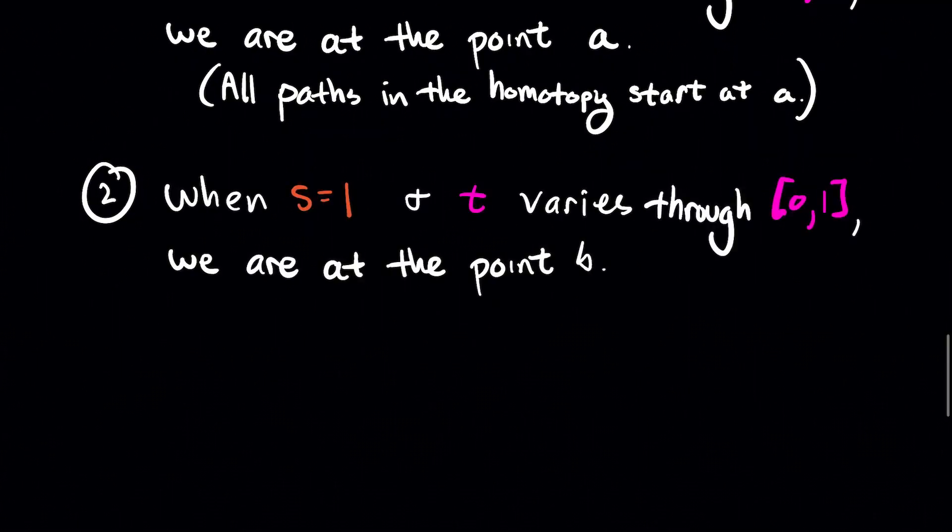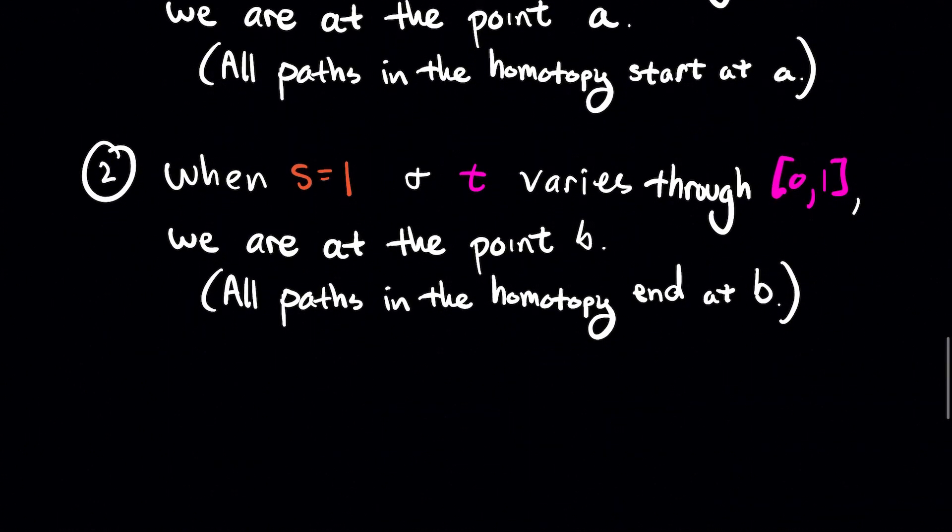Number 2: When S is 1 and T varies through the interval from 0 to 1, we are at the point B. In other words all the paths in the homotopy end at B.